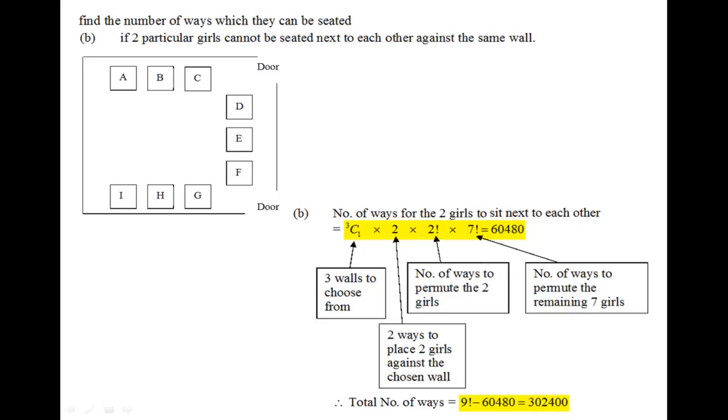The reason is because they have to be seated next to each other, so it's either A and B or B and C. It can't be A and C because that will mean that they will be separated. Hence there's this value of two right here.